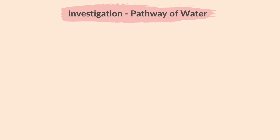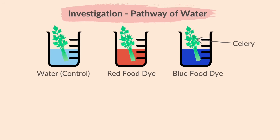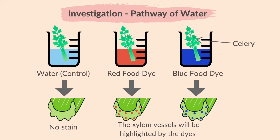Let's investigate, using a stain, the pathway of water through the above-ground parts of a plant. Place a plant like celery into a beaker of water as a control. In two other beakers, place celery in water mixed with food dyes — red in one and blue in the other. Leave all three plants in sunlight for a few hours, then cut cross-sections of the celery stalks and observe. The control will show no staining, while the other two stalks will show specific areas highlighted by the dyes, demonstrating that water moves through specific vessels — the xylem. Colour changes in the leaves will also be observable, showing water uptake by the plant.